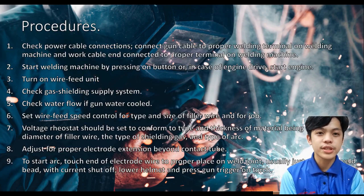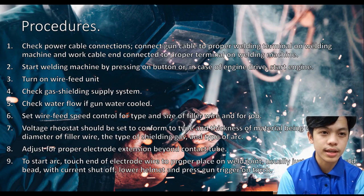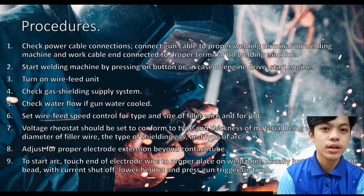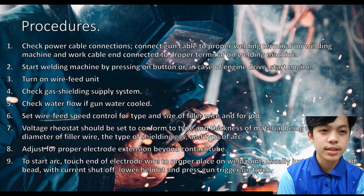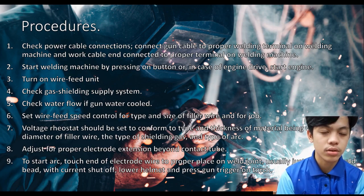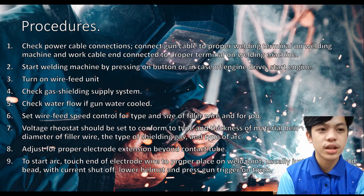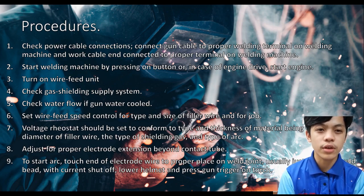For the welding procedure: first, check power cable connection, connect the gun cable to the proper welding terminal on the welding machine, and connect the work cable to the proper terminal on the welding machine. Number two, start the welding machine by pressing the on button, or in the case of an engine drive, start the engine. Number three, turn on the wire feed unit. Number four, check the gas shielding supply system. Number five, check water flow if the gun is water-cooled.